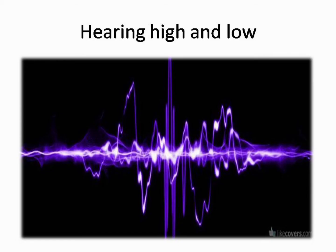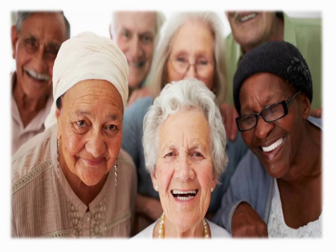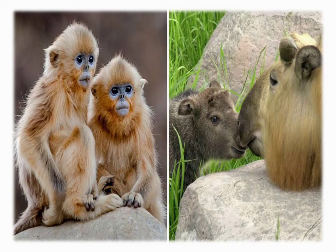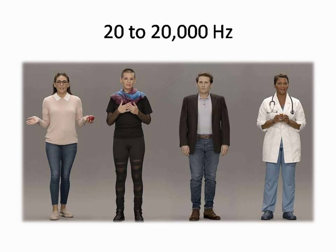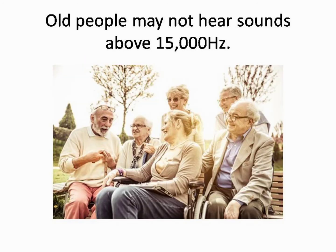Young people have good hearing — they can hear very faint sounds and very high-pitched sounds. Older people gradually lose the ability to hear the faintest and highest sounds. Hearing range describes the range of frequencies that can be heard by humans or other animals. The human range is commonly given as 20 to 20,000 Hz. Our hearing is more sensitive in the 2,000–5,000 Hz frequency range. As people get older, their hearing deteriorates, and by the time they are 50, they may not hear sounds above 15,000 Hz.